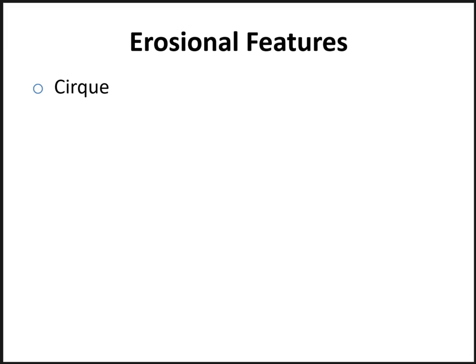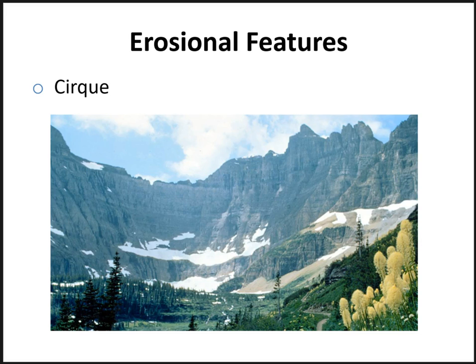Glaciers not only deposit but also erode features. In the next few slides I'll briefly discuss some erosional features of a mountain or alpine glacier. First is a cirque — where the glacier is accumulating, it plucks rocks out from the head of the valley, and the erosional features create this huge amphitheater-like depression in the valley head. We can see the glacier was at the head of this valley, slowly plucking away rocks, carving back into the valley head, creating this amphitheater-like feature.